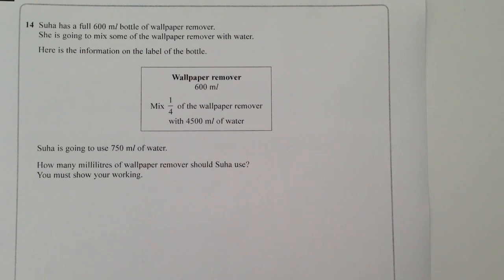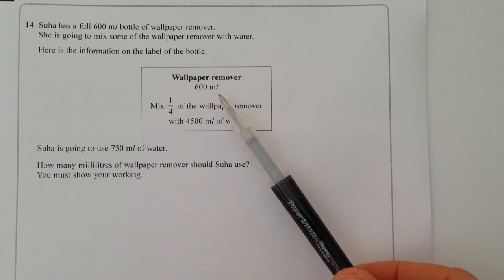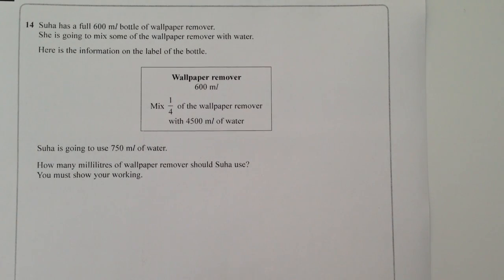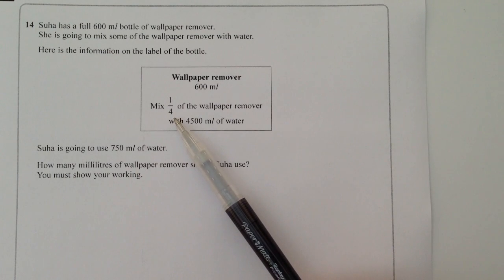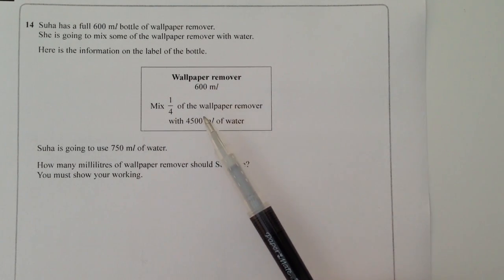So what we're told is that there's a 600ml bottle of wallpaper remover. And the instructions that we've given is that you mix a quarter of the wallpaper remover with 4,500ml of water. And if she's going to use 750ml of water, how much wallpaper remover should she use.